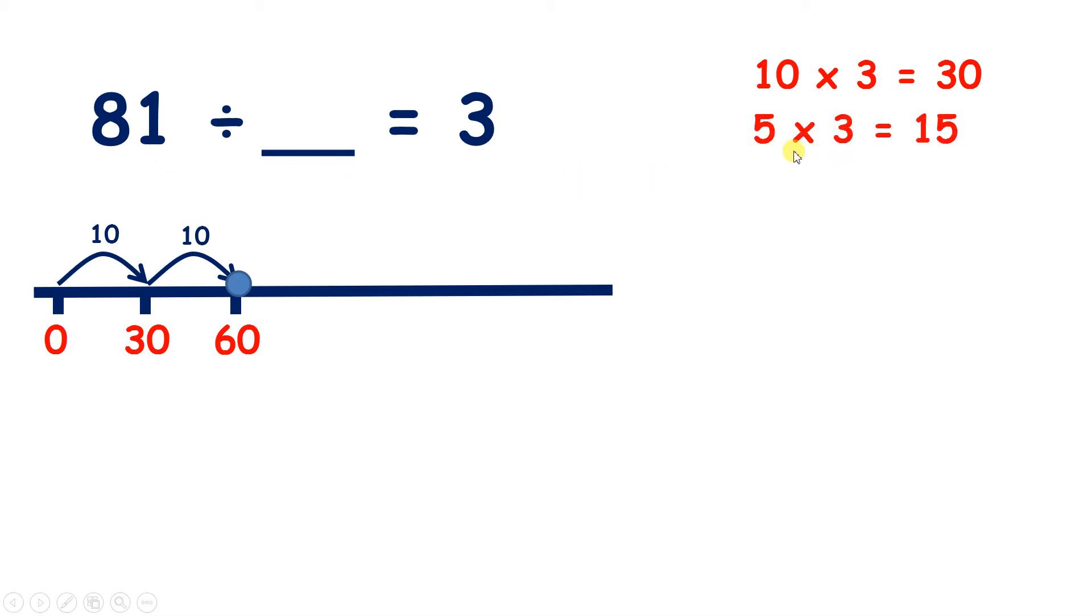But 5 times 3 is 15. So if we add another 5 3s, that takes us to 60 plus 15, which takes us to 75.